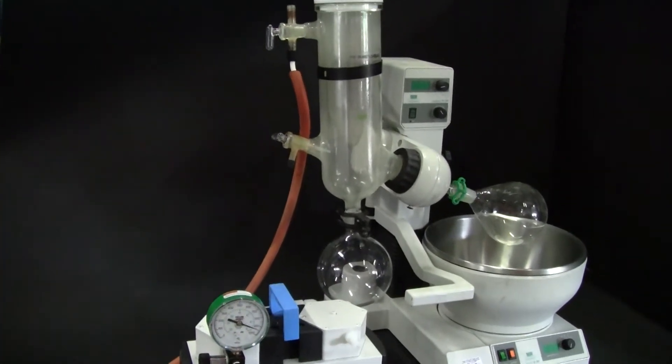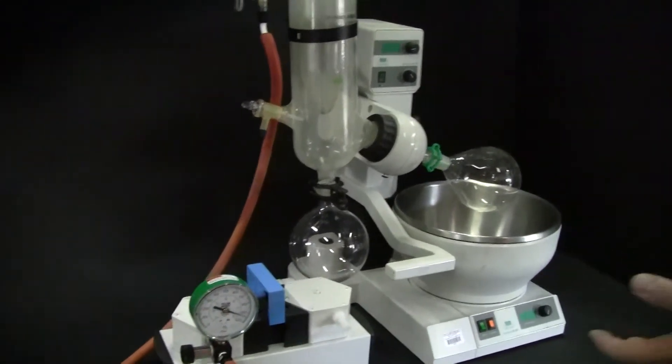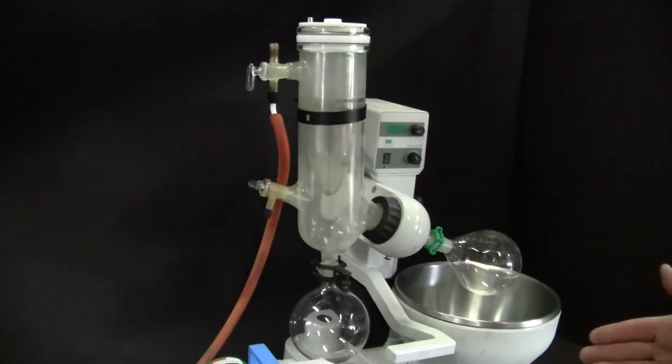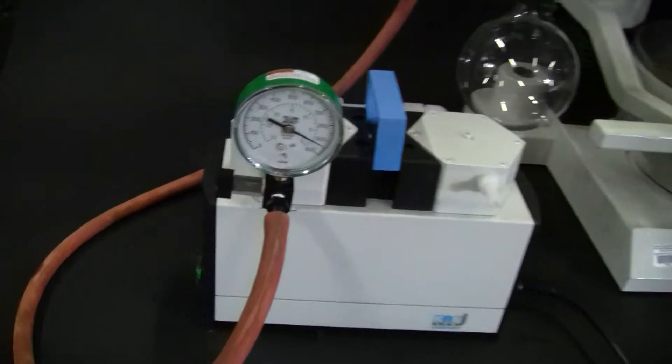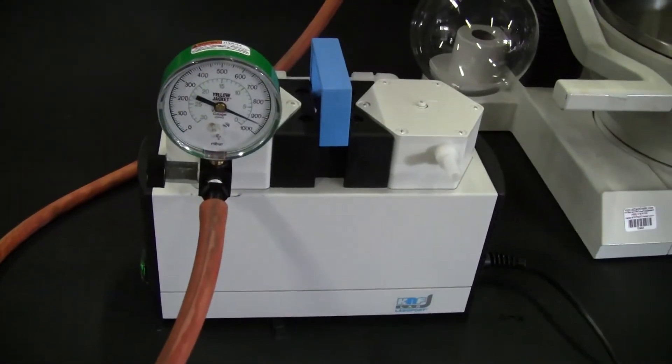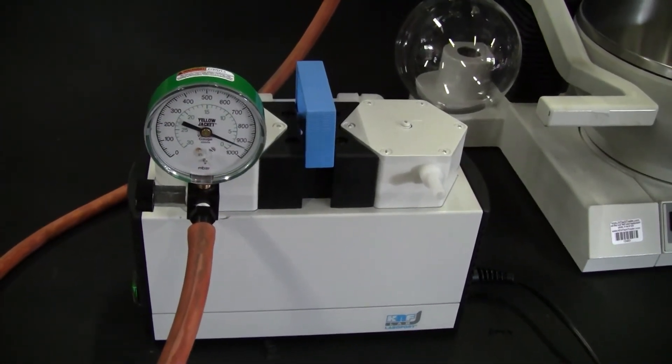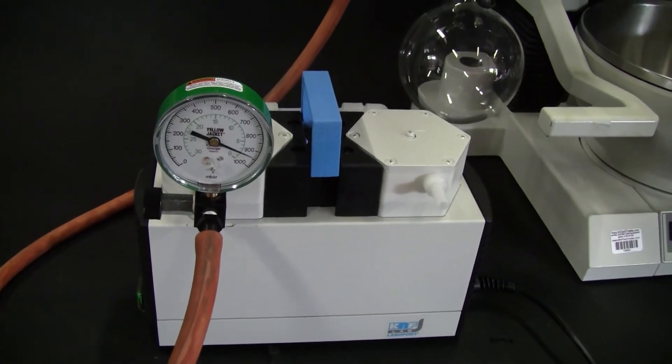What does this mean? It means that the system has a leak. This nice KNF pump, it's a UN 820.3, goes down to 10 millitorr - no, I'm sorry, 6 torr, about 10 millibar.